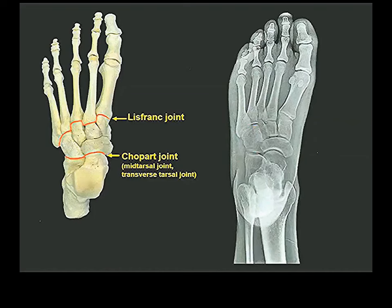The talonavicular and calcaneal-cuboid joints are separate joints with separate synovial cavities, but from an orthopedic point of view are often traumatized together — orthopedics call this the Chopart joint, more anatomically called the mid-tarsal or transverse tarsal joint. All the joints between the tarsal bones and metatarsals — cuboid to 4th/5th metatarsal, lateral cuneiform to 3rd, middle cuneiform to 2nd, medial cuneiform to 1st — are collectively called the Lisfranc joint. These joints can be ripped apart as a group, resulting in a Lisfranc dislocation.